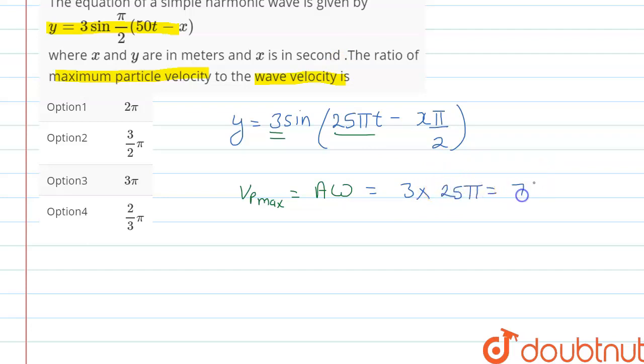Okay. Now we know that the wave velocity v = ω/k, where ω is angular frequency and k is the angular wave number. Omega we just have seen is 25π, and k is the coefficient of x, that is π/2.